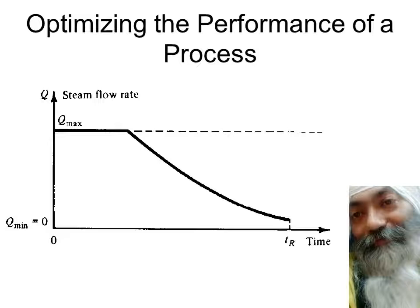This is how the steam flow rate Q should change: Q should be maximum up to a certain amount of time, as calculated, and thereafter the steam flow rate should gradually be reduced. This profile — its shape, its timing, its final time — is all calculated if you know the dynamics of the process well. The controller's job is to regulate this flow rate and follow this profile so as to maximize the profits. It is not for safety, not to suppress disturbance, not to ensure stability — but to follow this profile.